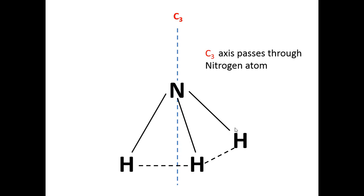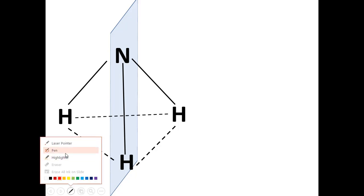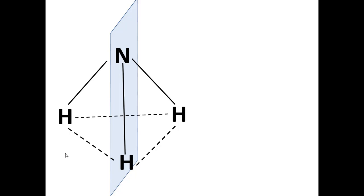The C3 axis passes through the nitrogen atom. Looking at the same ammonia structure from a slightly different perspective: one of the N-H bonds is straight in front, one N-H bond is to the left, and one N-H bond is to the right. There is a plane that contains one N-H bond — this is sigma V, the vertical plane of symmetry.